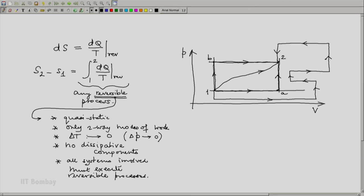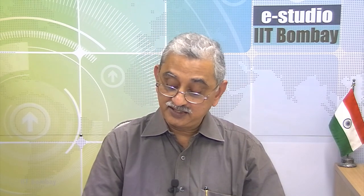If you have really selected a reversible path and done your integration properly, then the result would be the same and the change in entropy s2 minus s1 will be represented by that expression which is the integral from 1 to 2 of dq by T over a reversible process.